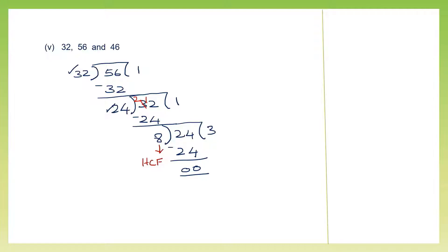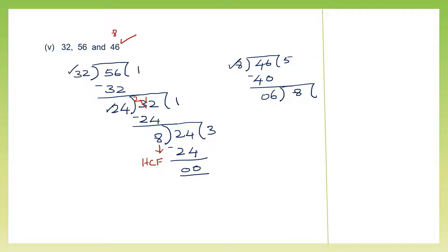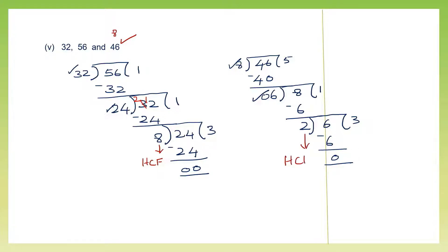Now I'm going to use 8 and 46. Put 46 inside and 8 outside. 8 fives are 40, minus — remainder 6. Now 6 is the next divisor, and 8 goes inside: 6 ones are 6, minus — remainder 2. Continuing: 2 is divisor, 6 goes inside, 2 threes are 6 — remainder 0. The last divisor giving remainder 0 is 2. So the HCF of 32, 56 and 46 is 2.